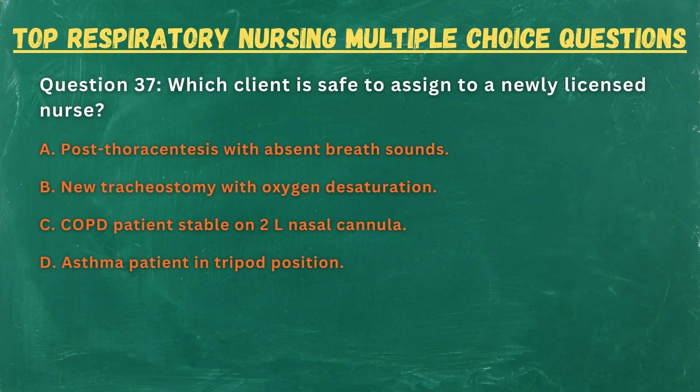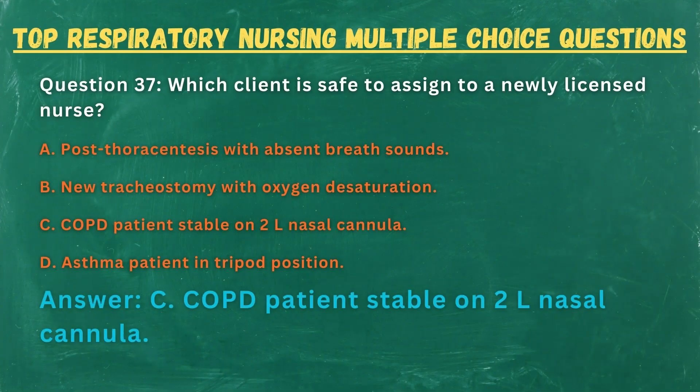Question 37. Which client is safe to assign to a newly licensed nurse? A. Post-thoracentesis with absent breath sounds. B. New tracheostomy with oxygen desaturation. C. COPD patient stable on 2L nasal cannula. D. Asthma patient in tripod position. Answer: C. COPD patient stable on 2L nasal cannula.